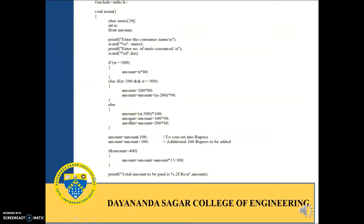If not, if the number of units consumed is above 300 — say it is 350 — then for the first 200 units it is 200 into 80, for the next 100 units it is 100 into 90, and for the additional 50 units it is 50 into 100, that is 1 rupee, which is written as 100 paisa.